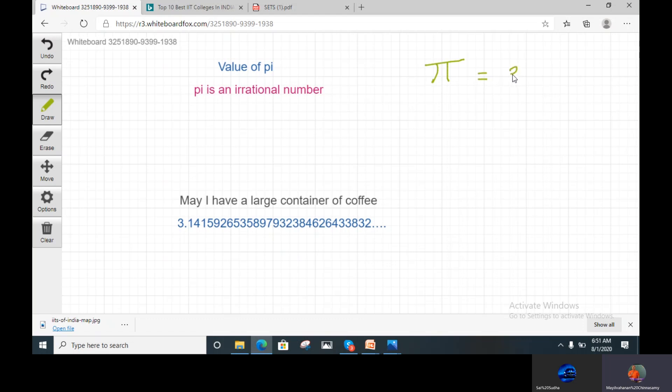Circumference of the circle, that is 2 Pi r, by diameter of the circle. Circumference by diameter will give the ratio Pi. So Pi always stands on the circle.